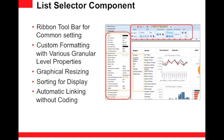The most amazing thing is that when you select a value from the list component, the data in associated components such as charts, pivot tables, and tables will be filtered automatically. You don't need to do any manual setup — once you drop the list component into your report, the publisher handles the linking between components automatically.